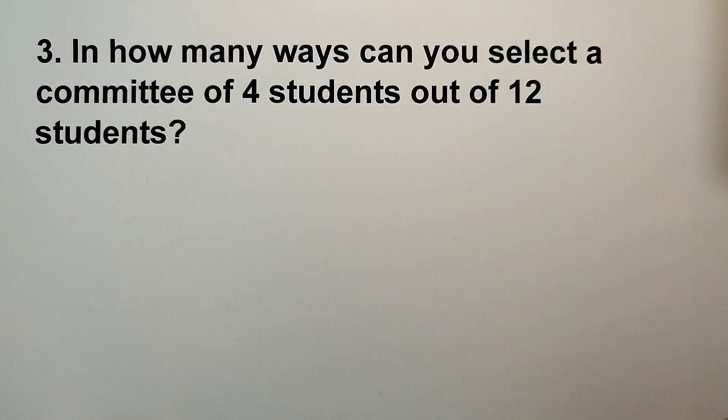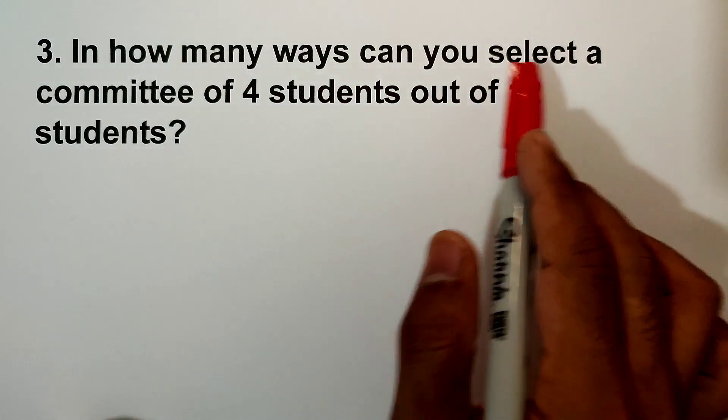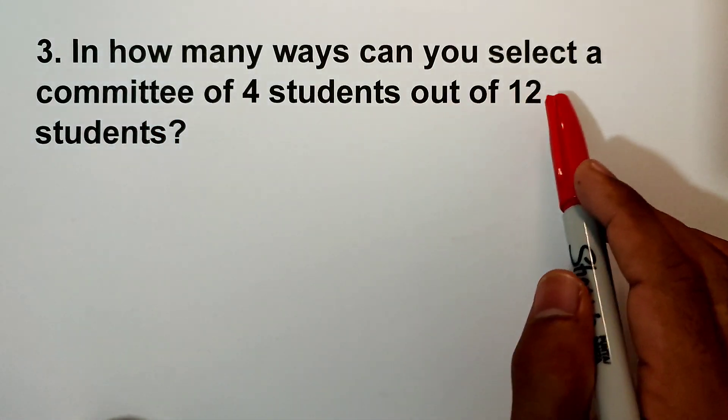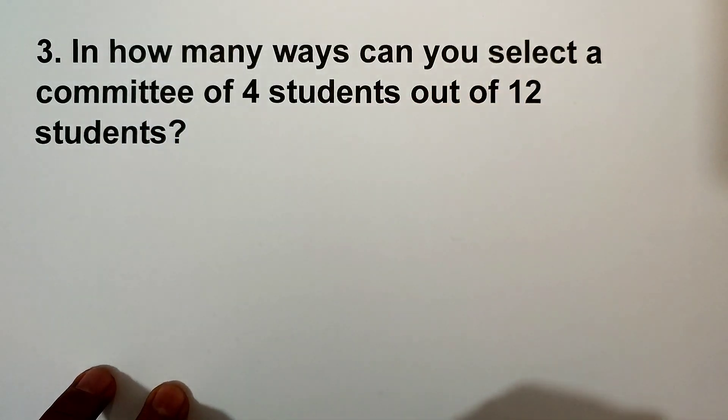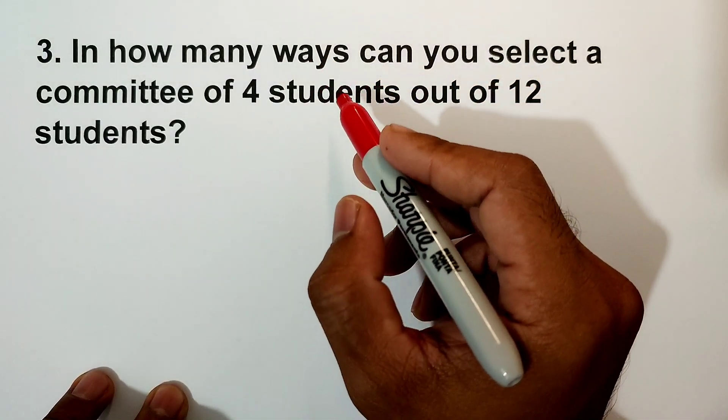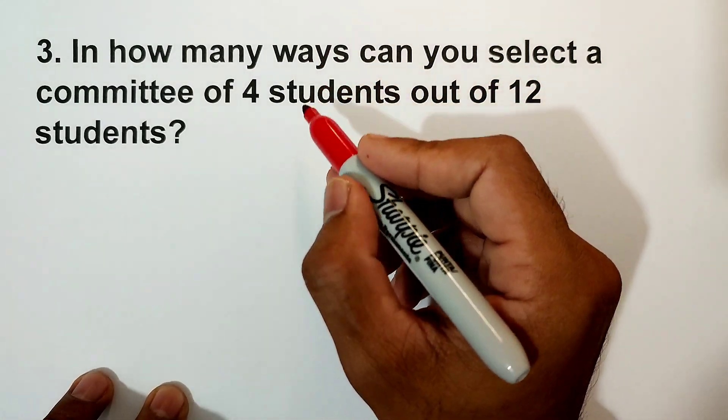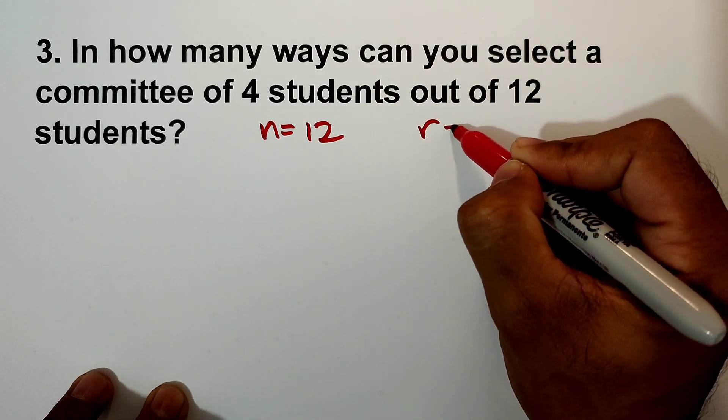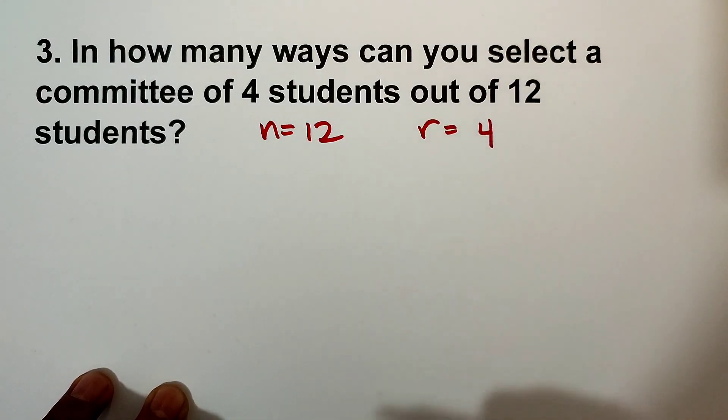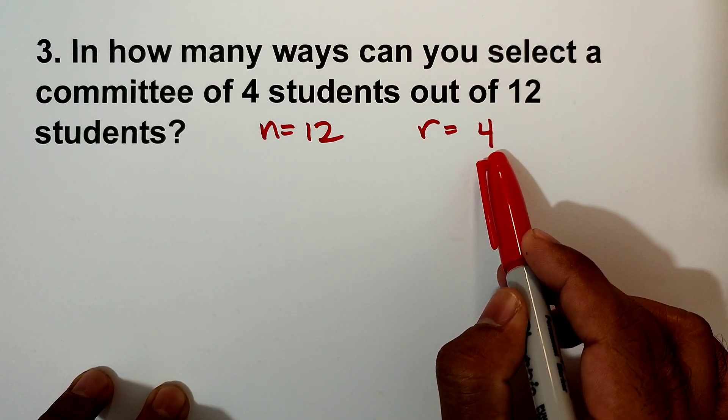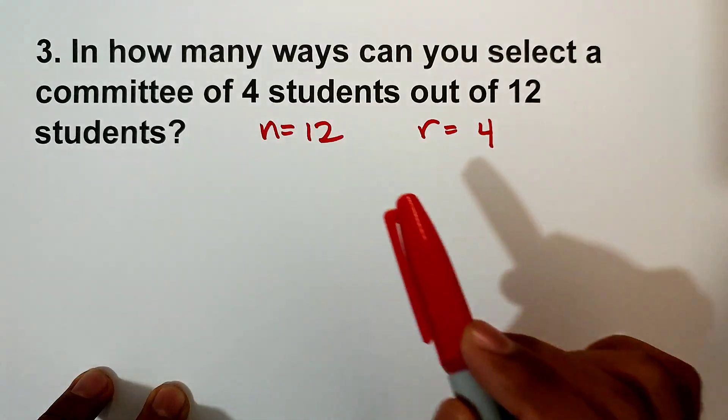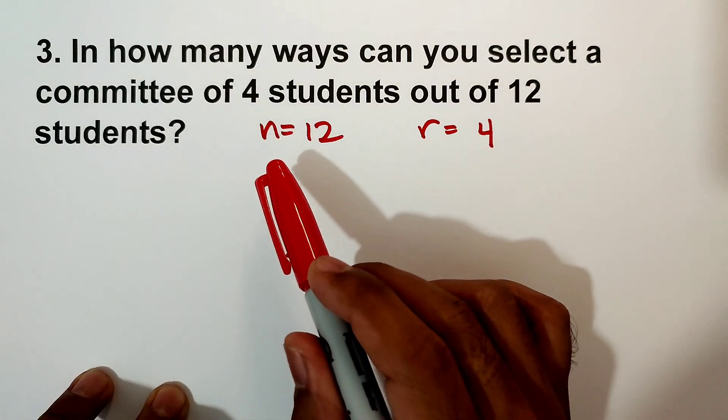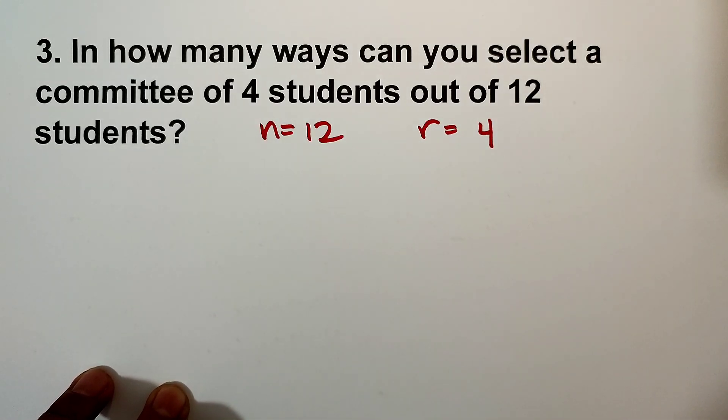So let us have example number 3: In how many ways can you select a committee of 4 students out of 12 students? So again, the first thing you do is identify the value of n. n is equal to 12, and then identify the value of r, r is equal to 4. So that means you have to get 4 from 12. So that's what you always need to remember - identify n and r. Now what do we need to use, is it combination or permutation? It always depends on what is being asked.